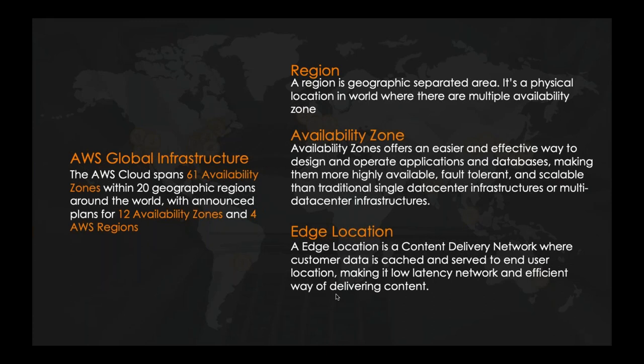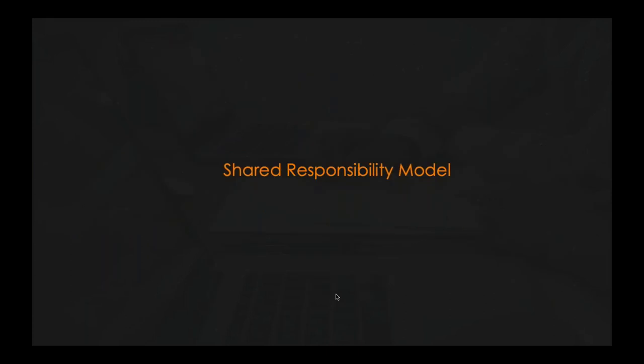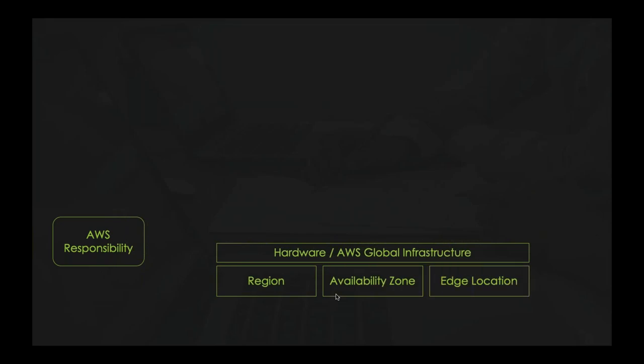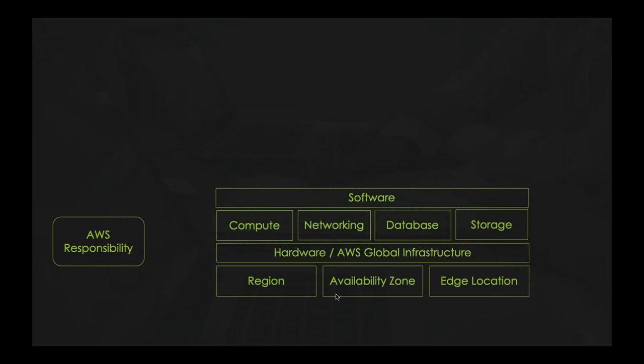One of the most important parts is shared responsibility — for what part AWS is responsible and for what part you are responsible. AWS is responsible for maintaining the hardware and global infrastructure like regions, availability zones, and edge locations. AWS is also responsible for the software layer including computing, networking, database, and storage — the four core services. Maintaining all the hardware and software required to create an EC2 instance, VPC, or other services is AWS's responsibility.